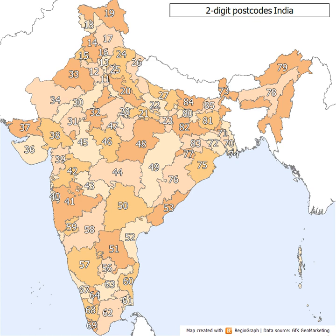The first three digits of the PIN represent a specific geographical region called a sorting district, which is headquartered at the main post office of the largest city and is known as the sorting office. A state may have one or more sorting districts depending on the volumes of mail handled.